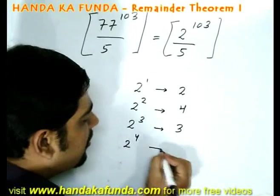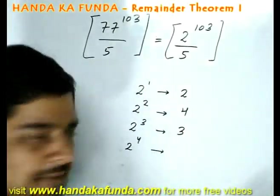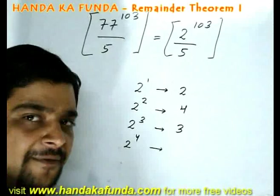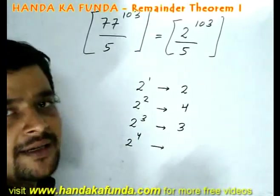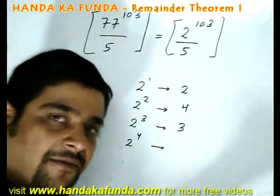Now for finding out 2 to the power of 4, I can use two ideas. One is I actually calculate 2 to the power of 4, which comes out to be 16, and then look at the remainder from 16 for 5, which is 1.